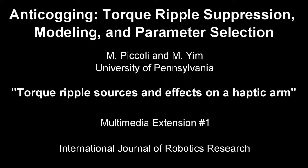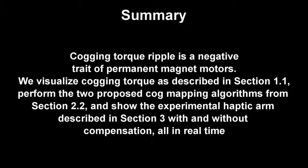Anti-cogging, torque ripple suppression, modeling, and parameter selection. Cogging torque ripple is a negative trait of permanent magnet motors. We visualize cogging torque as described in Section 1.1, perform the two proposed cog mapping algorithms from Section 2.2, and show the experimental haptic arm described in Section 3 with and without compensation, all in real time.